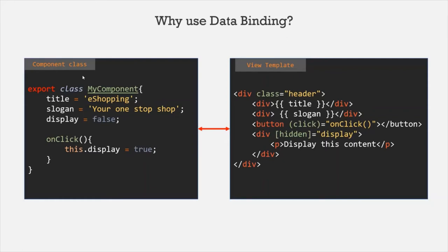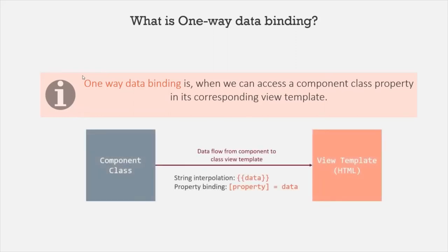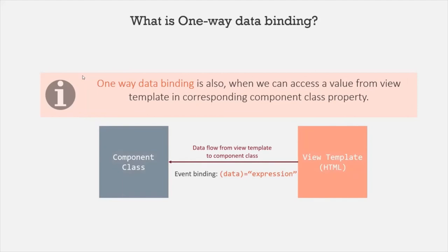Data binding can be classified into two types: one-way data binding and two-way data binding. In case of one-way data binding, the data flows in one direction. One-way data binding is when we can access a component class property in the corresponding view template, and this can be achieved using string interpolation or property binding in Angular. We will talk about string interpolation and property binding in our coming lectures. One-way data binding also means we can pass data from the view template to its corresponding component class, and this can be achieved using event binding in Angular.